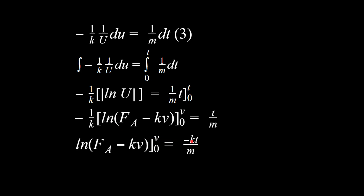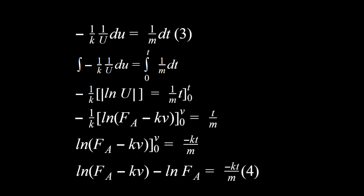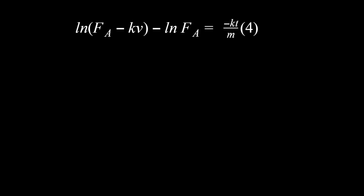I re-substitute what u equals back in, so the left side becomes the natural log of (F_A minus kv). I then apply the definite integral bounds: the upper bound gives ln(F_A minus kv) and the lower bound — where v equals zero — gives ln(F_A). The right side remains minus kt/m. Think about your natural log rules for the next step.